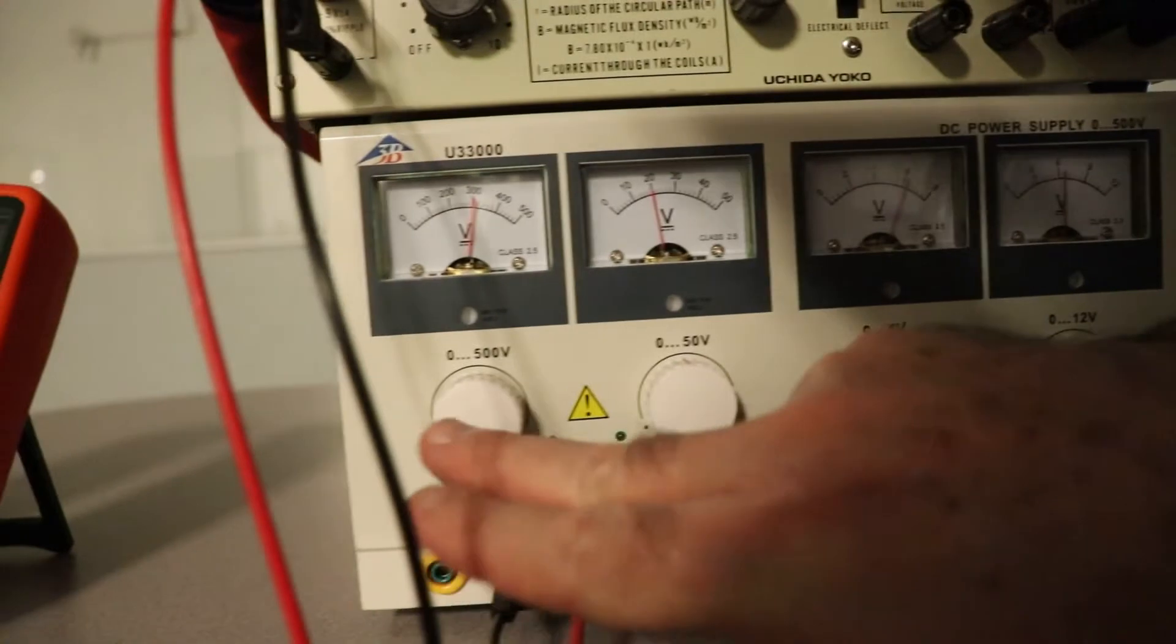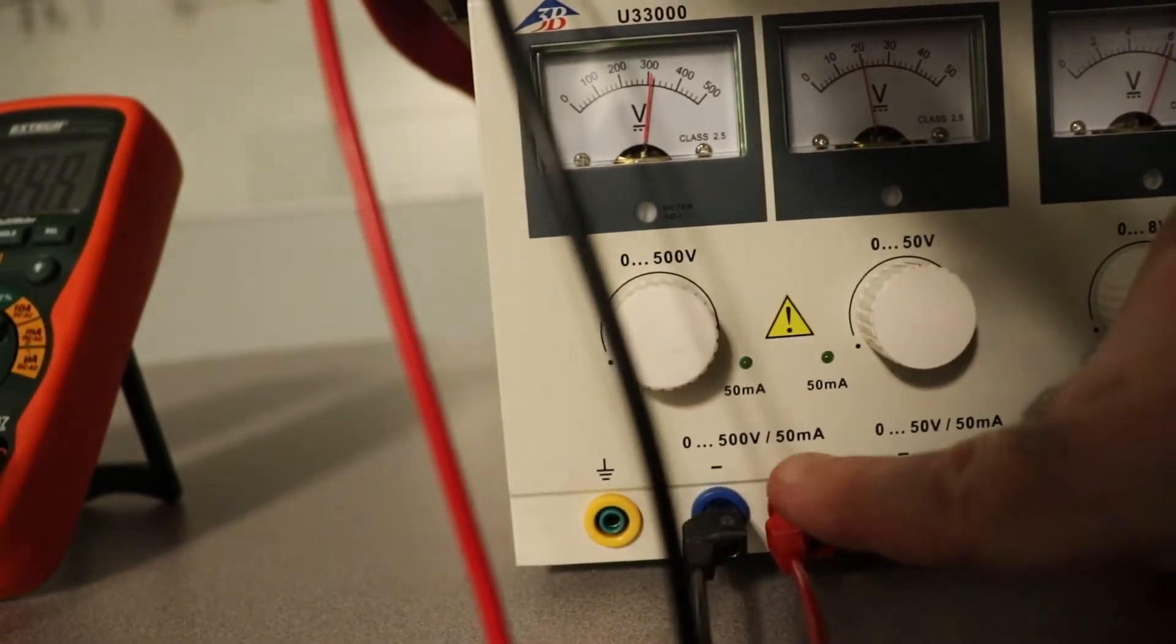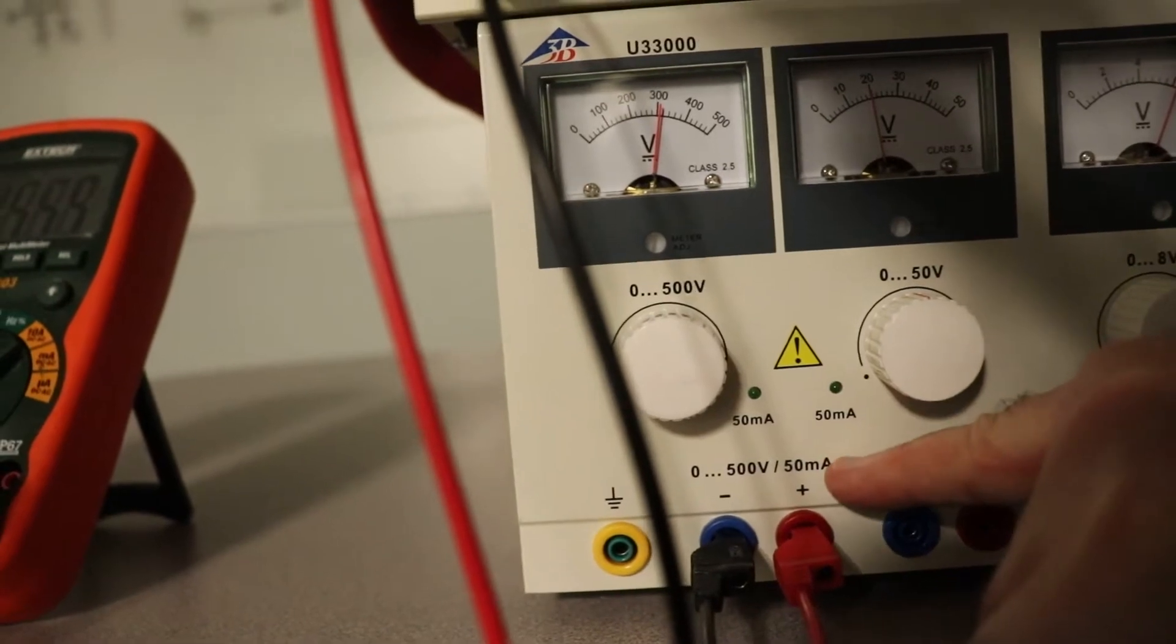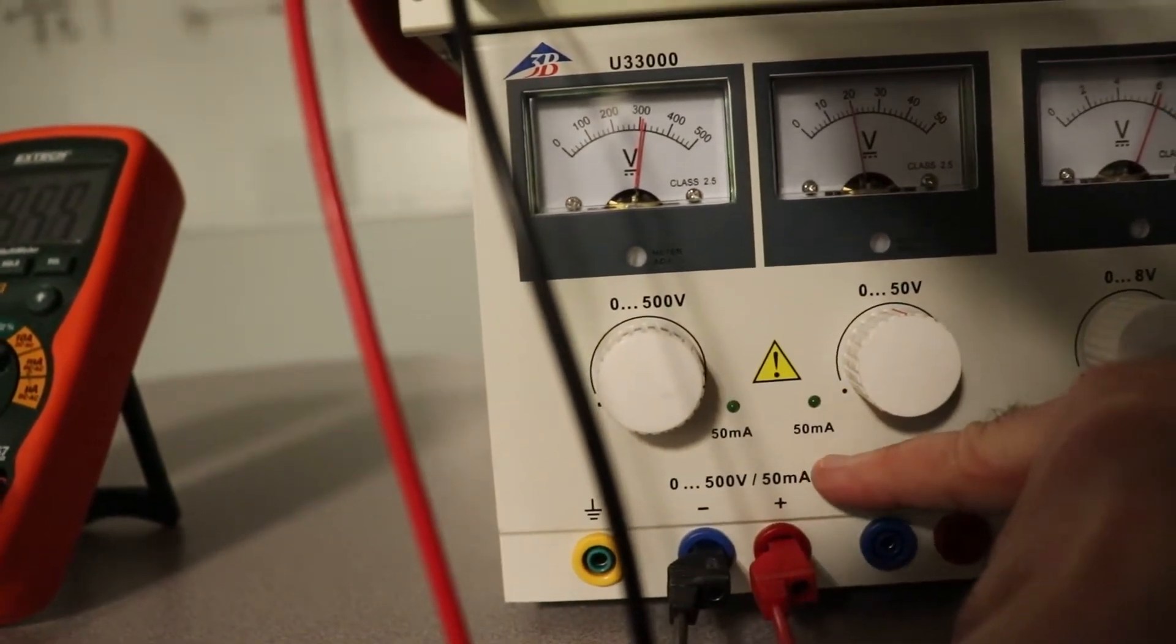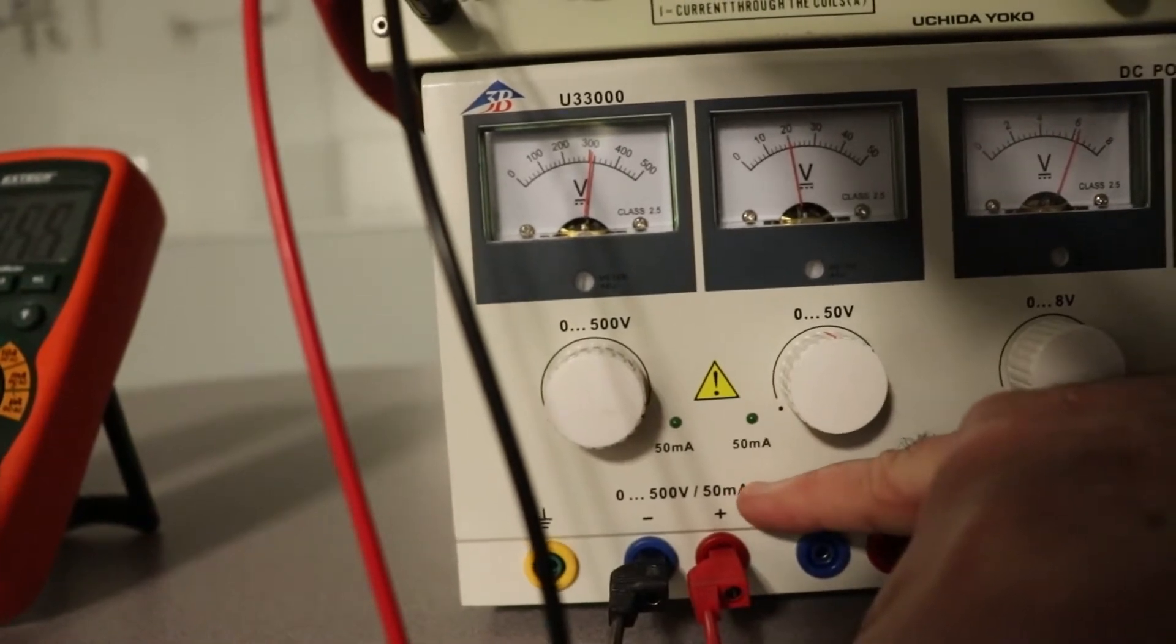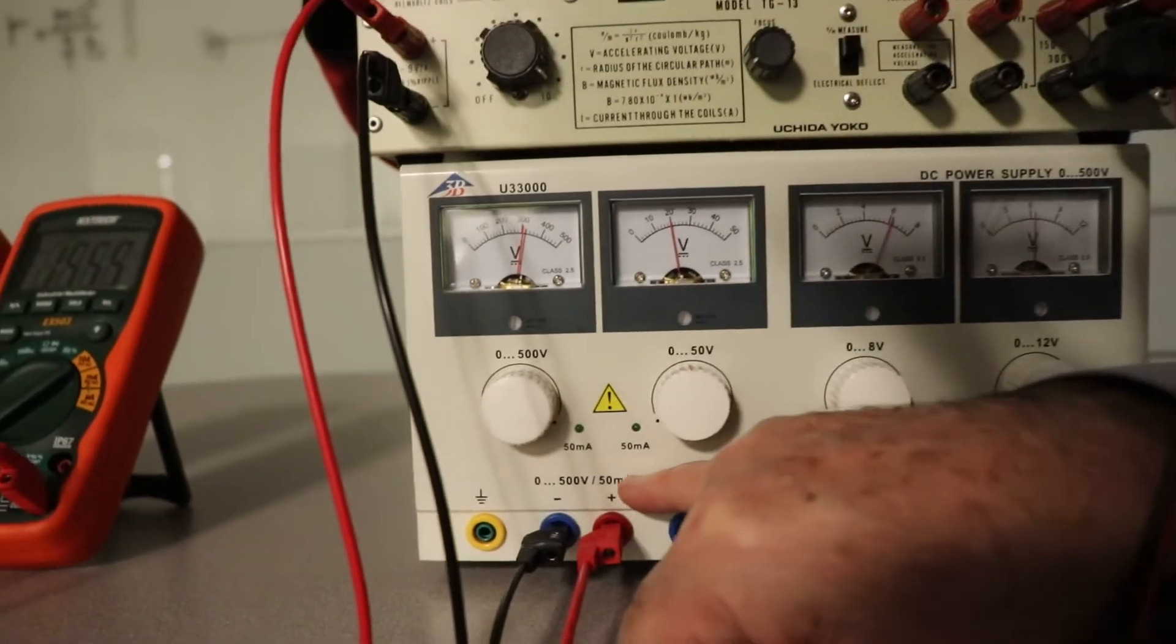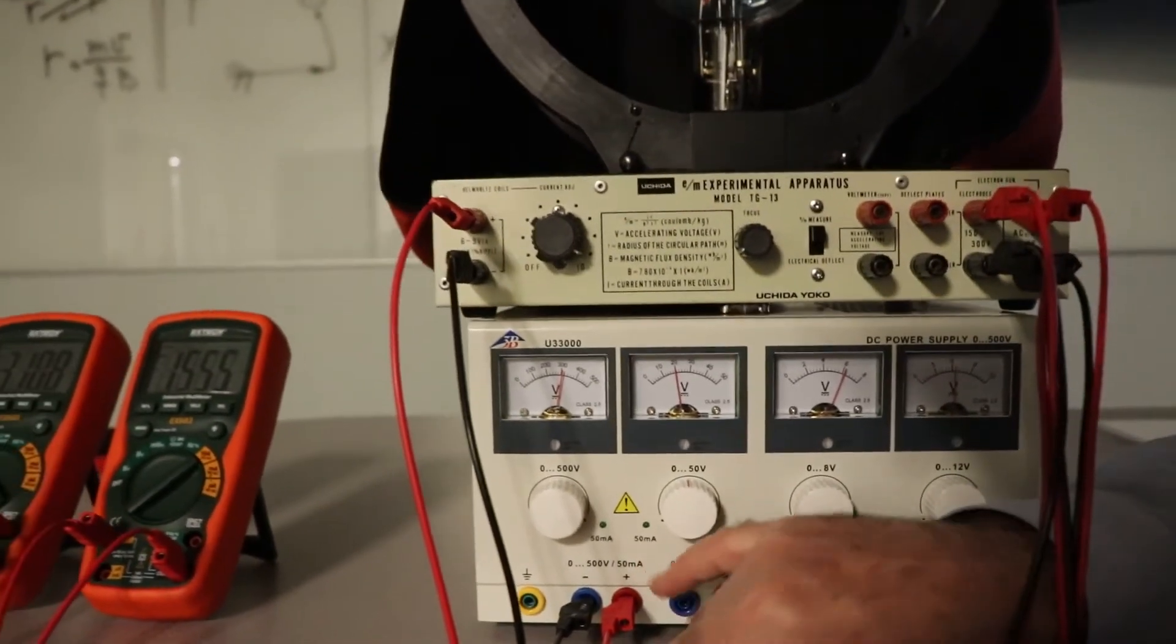We're not using this power supply. And then this is the accelerating voltage here. This goes from 0 to 500 volts. It's got very little current, but we just want a little beam of electrons. By the way, when you accelerate an electron, it gives off light. And that's that color you're seeing, that blue-green light that forms the beam.